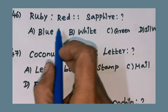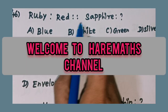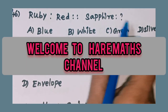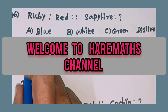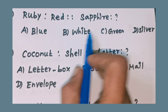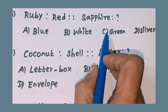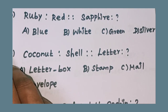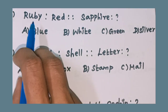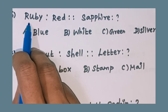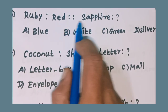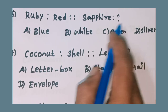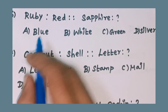46th question: Ruby is to Red as Sapphire is to question mark. Option A: blue, Option B: white, Option C: green, Option D: silver. Ruby stone color is red; sapphire stone color is Option A: blue.